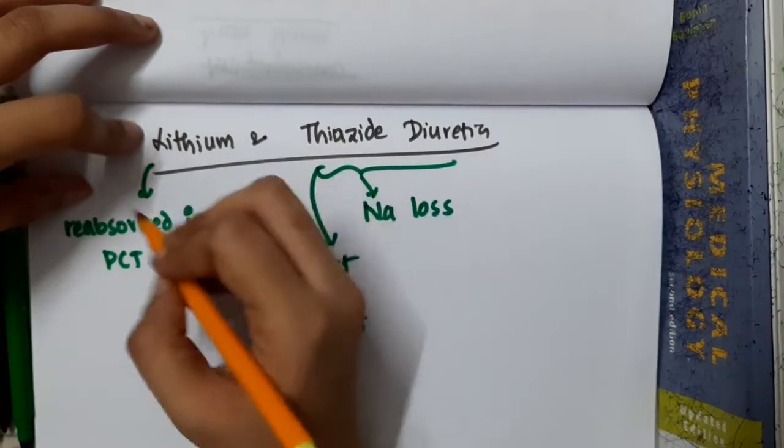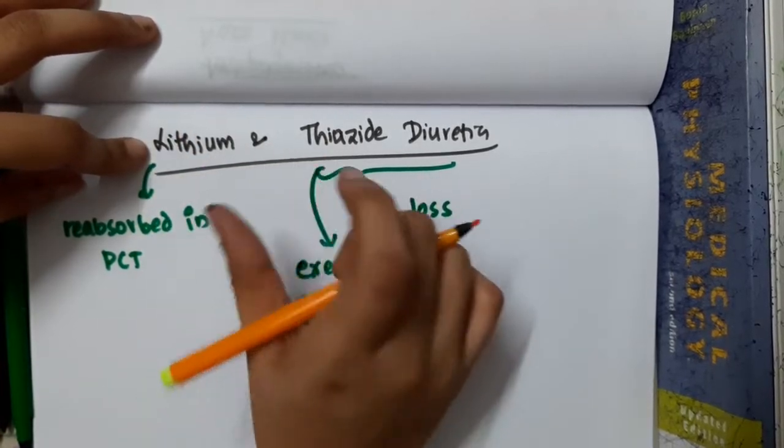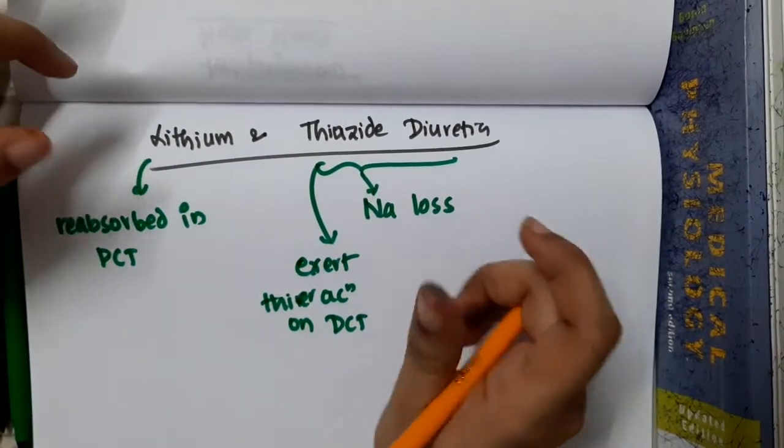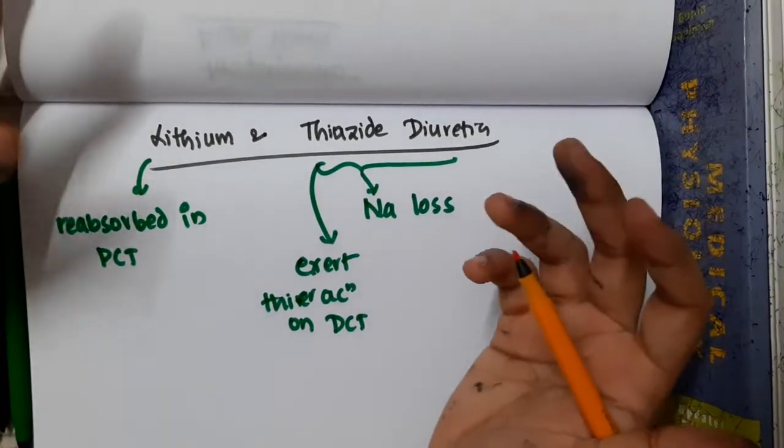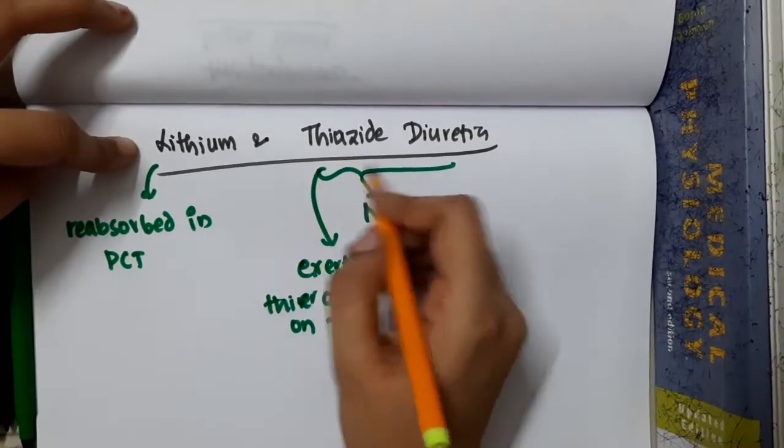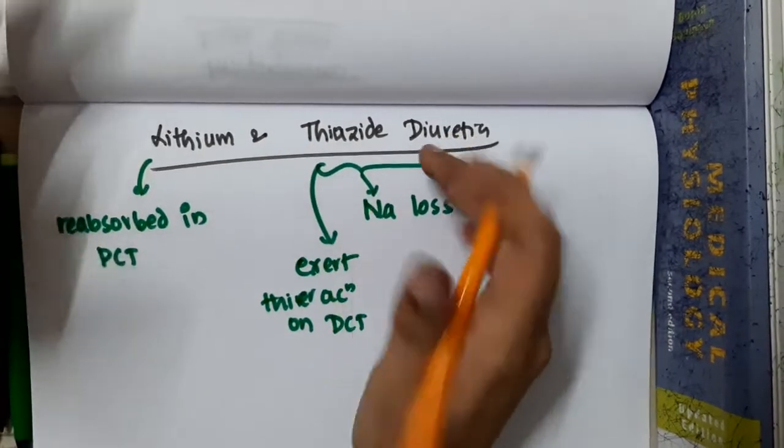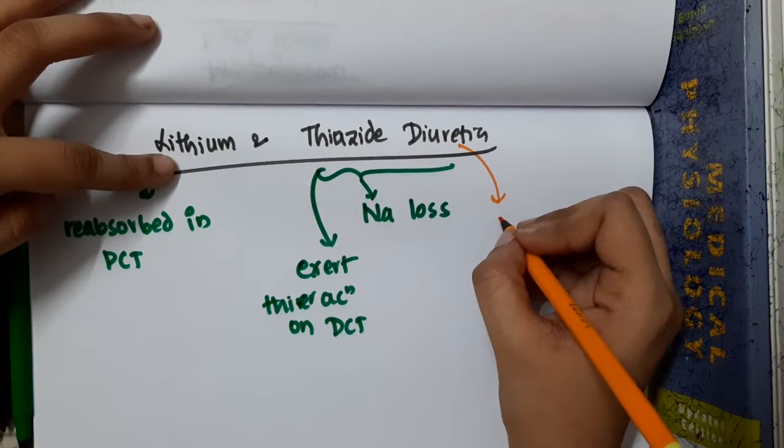Because they both have similar type of structure and they both have similar biochemical properties, thiazide diuretics gets confused with sodium and lithium. It treats them similarly and as a result...